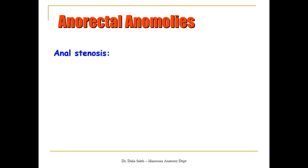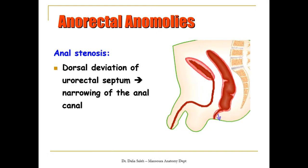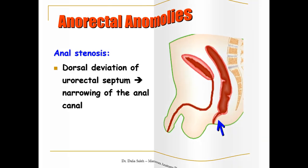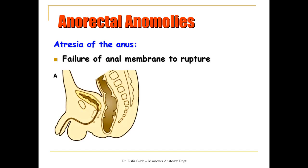Another anomaly is anal stenosis, in which there is dorsal deviation in the formation of the urorectal septum backwards, leading to narrowing of the anal canal. There is also a condition called atresia of the anus, which occurs because of failure of the anal membrane to rupture. In this case, the upper part of the anal canal terminates blindly while the lower part of the anal canal does not develop, as we can see here.